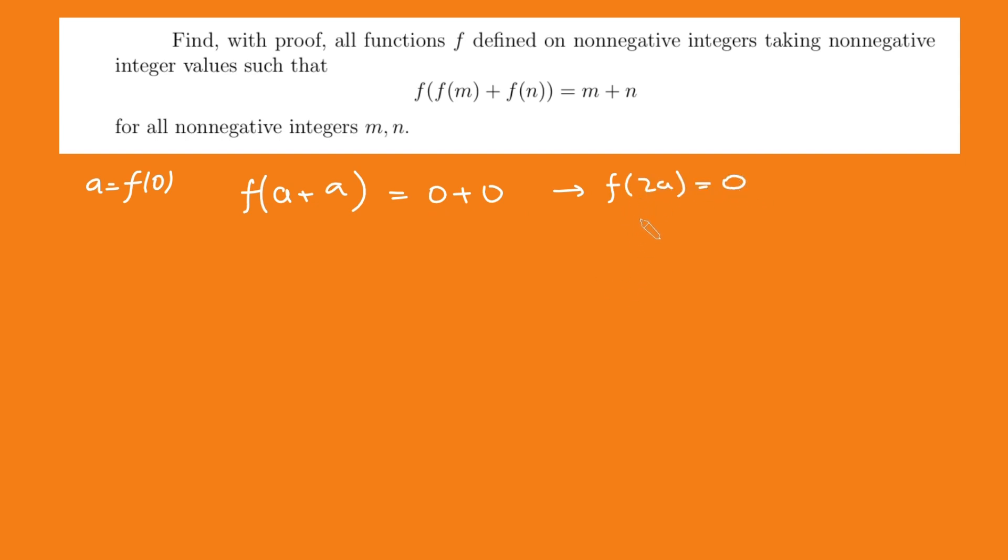Okay, cool. Next thing I'm going to plug in m and n both equal to a. So m and n equal to a into the equation. And then I get f of f of 2a plus f of 2a equals 2a plus 2a. But remember f of 2a is 0 from this. So we get f of 0 plus 0 equals 2a plus 2a is 4a. But 0 plus 0 is 0. And we've got f of 0 on the left hand side. But f of 0 by definition is just a. And so we get a equals 4a. And this of course implies that a must be 0.